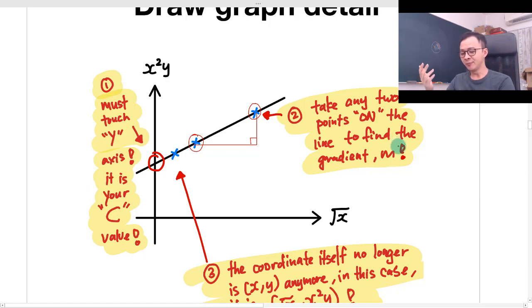The second thing is, because we need to find the gradient, because the question asks you to find the gradient value from the graph. So how to indicate that you actually take the value from the graph. So normally I will take any two points on the line. Don't take the point off the line.